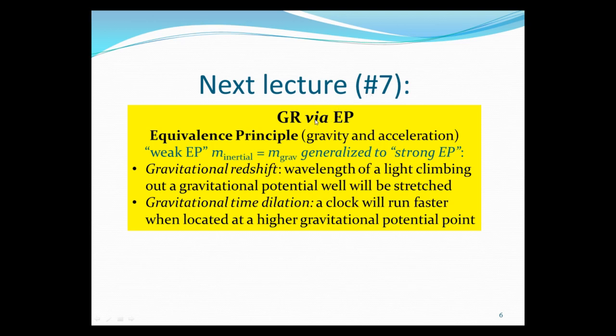The lecture, number seven, next time, we will basically start GR. But, in a way, I believe, is historically, is the way it started. And also, is much more physical rather than just more mathematical. So, is the fact that we'll see the equivalence principle, which is equal between gravity and acceleration. And there's something called weak equivalence principle, which says inertial mass and the gravitational mass are equal. Then Einstein generalizes to strong equivalence principle, to electricity and magnetism. And then we will see gravitational redshift. The wavelength of light climbing out of gravitational potential will be stretched, so it'll be redshifted. And gravitational time dilation effect, a clock will run faster when located in a high gravitational potential point. All these effects are contained in general relativity, but it's much easier to see them in this equivalence principle approach.